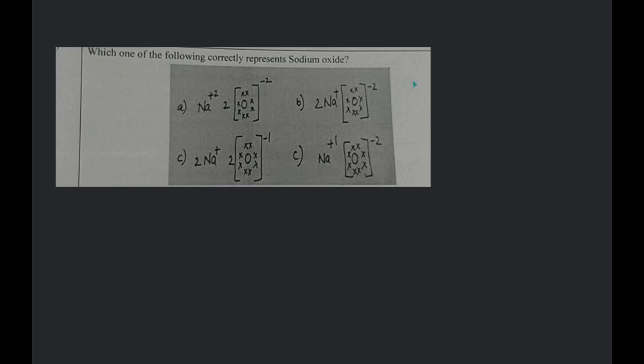See, it is asking for a Lewis structure. This is a Lewis structure, okay. So, it is asking the representation of sodium oxide. What is sodium oxide basically? Can you suggest me the formula for that? Sodium oxide is basically Na2O.